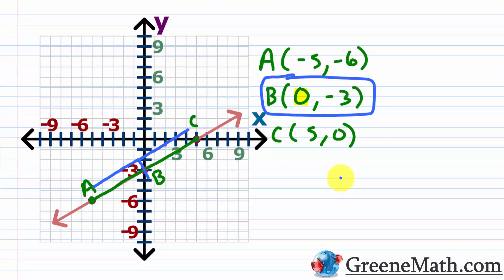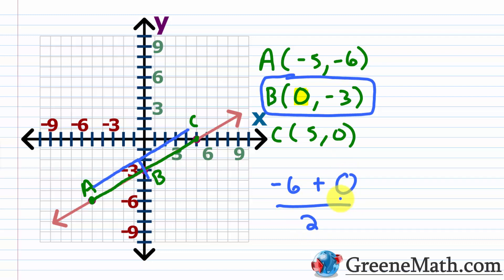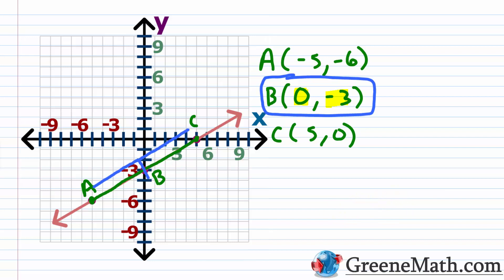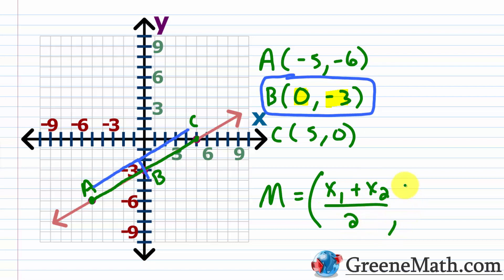Going back up: to find the Y coordinate of the midpoint — negative three — we take negative six, the Y coordinate of A, and add zero, the Y coordinate of C, then divide by two. Negative six plus zero is negative six; negative six divided by two is negative three. That's how we get the negative three. The midpoint formula is: capital M equals the quantity X sub one plus X sub two over two, comma, Y sub one plus Y sub two over two. We're just taking the average of the X values and the average of the Y values.